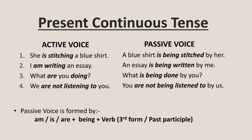Present continuous tense. Here are some examples in present continuous tense. Let us see how we can change these sentences from active voice to passive voice. Example one: she is stitching a blue shirt. Here, she is the subject, is stitching is the verb in present continuous tense, and a blue shirt is the object. When converted into passive voice, it becomes: a blue shirt is being stitched by her.